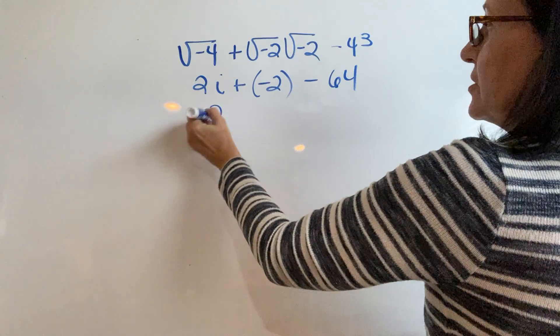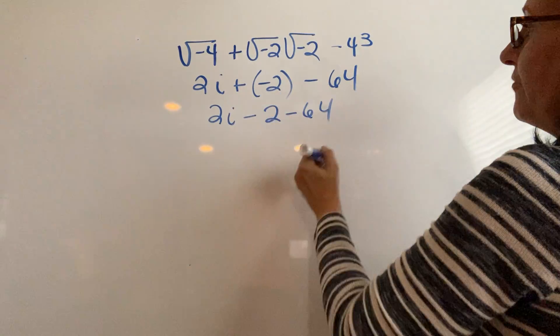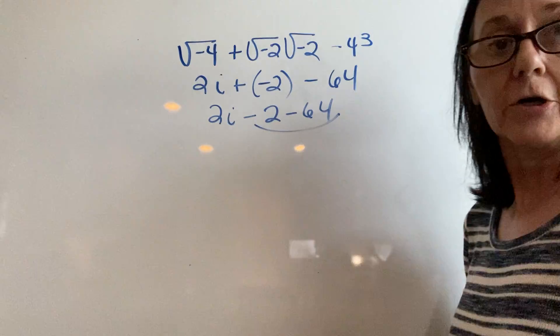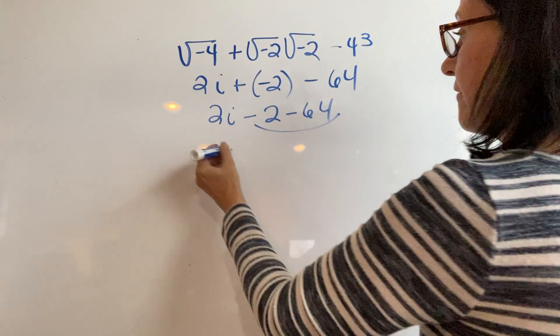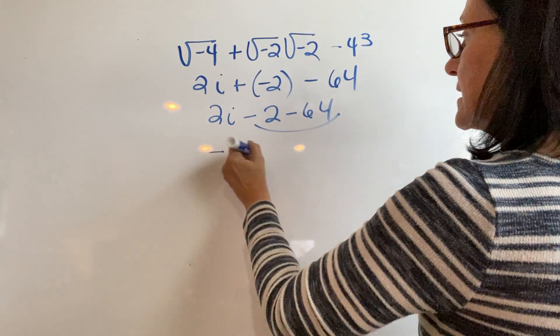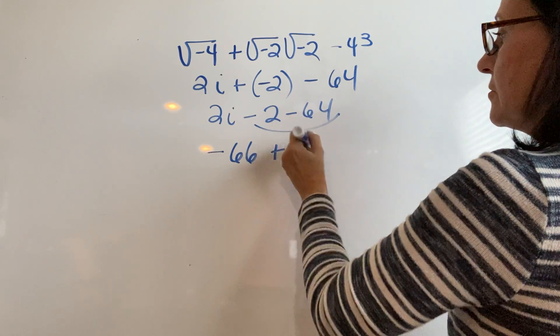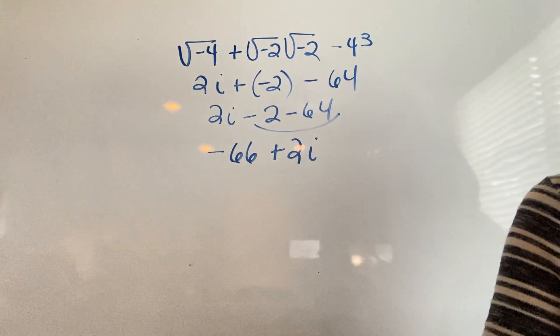So we have 2i minus 2 minus 64. We combine our constants. That always goes out front. Negative 66 plus 2i is the correct answer.